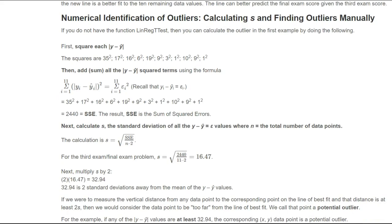We do have numerical identification of outliers — we calculate our standard deviation and then find outliers manually. But the way you're going to do it is with technology. If you want to see the detailed manual calculation, please walk through it. I'm not going to go through it because you'll be using technology. Due to our condensed summer semester, I'll let you use technology and not worry about manually calculating this.